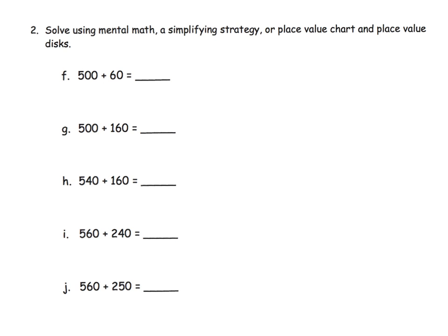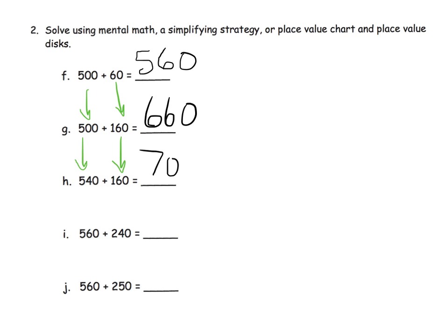Here's another example of that same concept, beginning with a fairly simple sum of 560. Moving from problem F to problem G, the 500 stays the same but the 60 gets bigger by 100, so the answer gets bigger by 100, giving a new sum of 660. Similarly, the next addend gets bigger by 40 while the other stays the same, bumping the answer up to 700. This is a really cool little pattern that Eureka Math included for the benefit of students.